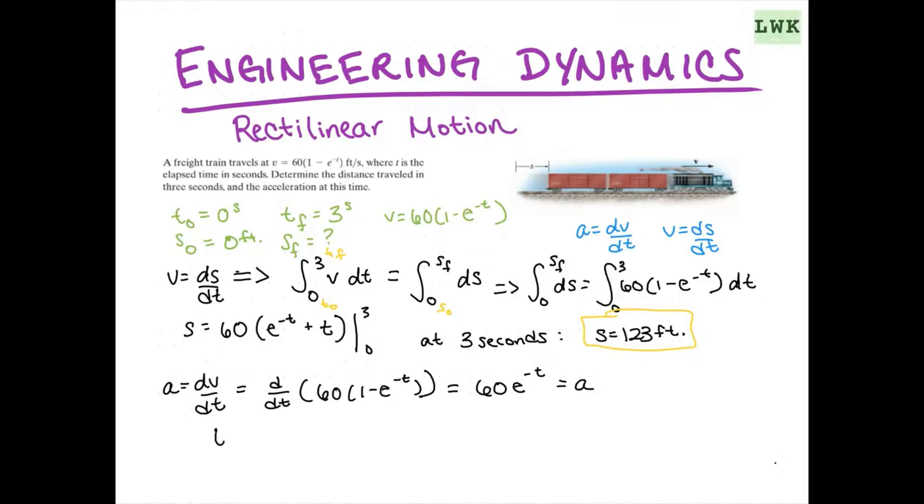So, let's just plug in. We know our final time is 3 seconds. And that's the time we want to evaluate our acceleration at. So, we're going to just plug in 60(e to the negative 3) equals a. And that is going to give us 3 feet per second squared. Actually, it comes out to about 2.9. But we're going to just round up to 3. And there we go. That's one problem solved.